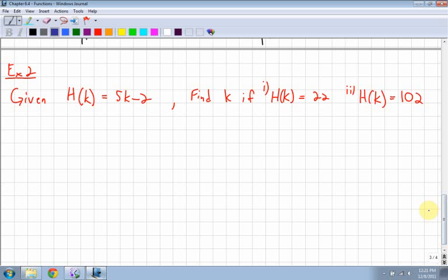All right. Last example. Given, here's my function, find k if h of k is equal to 22. Now this time, I'm replacing h of k, which is this h of k. So instead of putting a value in for k, I'm plugging a value in for the whole thing. So that means I'm replacing it entirely with 22. Equals 5. What am I putting in for k? Am I putting 22? No, I'm leaving k, k. It hasn't changed. Because this tells you, find k. So I'm not solving for h of k. I'm actually solving for k this time.